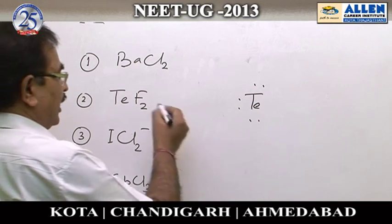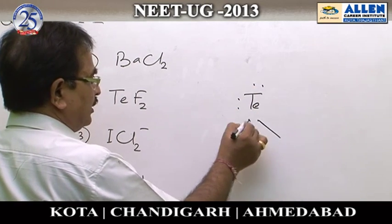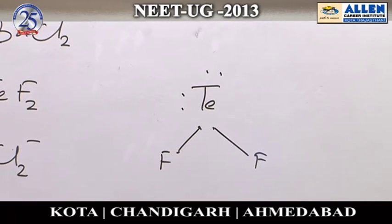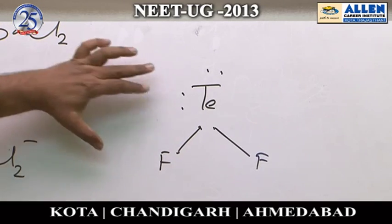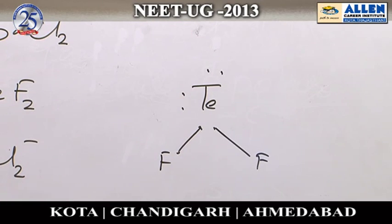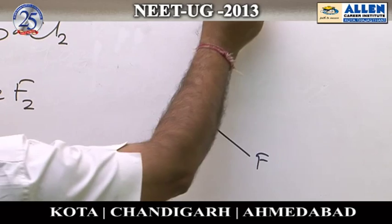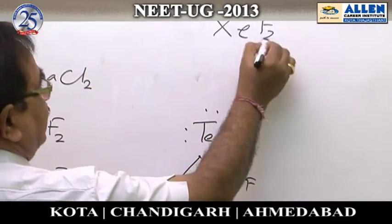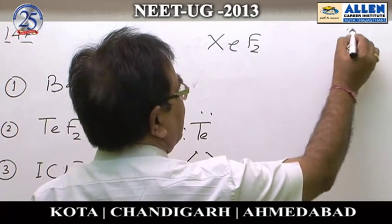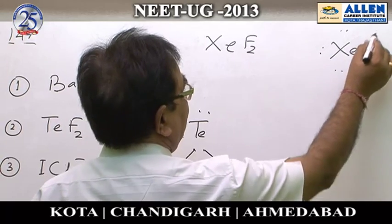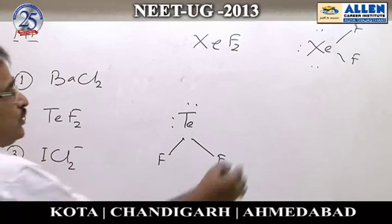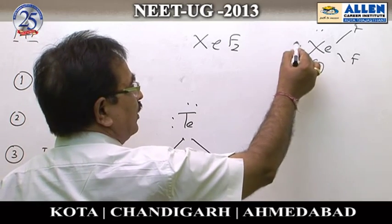The second option is TeF2. Tellurium is an element of the oxygen group and has 6 electrons in its valence shell. Two fluorine atoms are bonded through covalent bonds, giving Te 2 lone pairs and 2 bond pairs. For XeF2, xenon has 3 lone pairs and 2 bond pairs surrounding it.